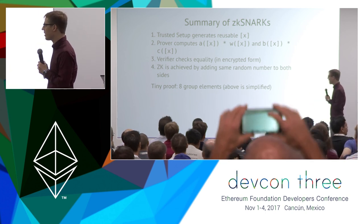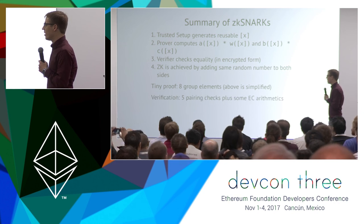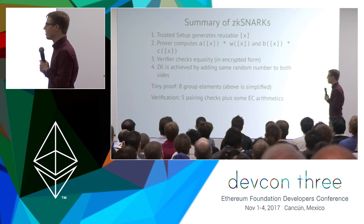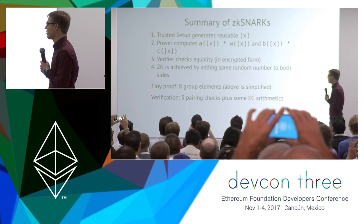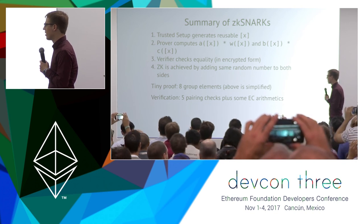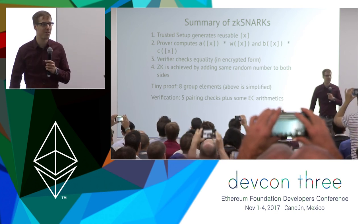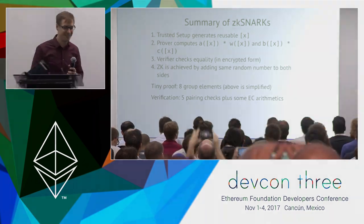The proof itself consists of eight group elements in an elliptic curve. Verifying requires five pairing checks plus some elliptic curve arithmetic. Thanks for your attention.